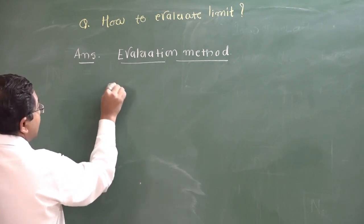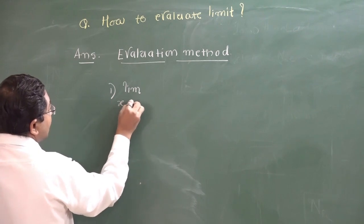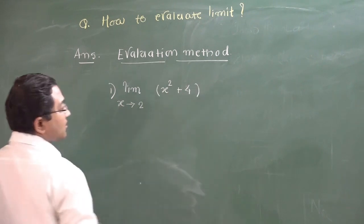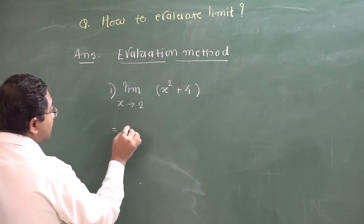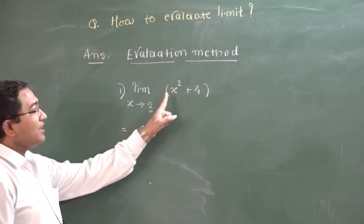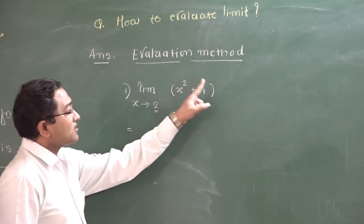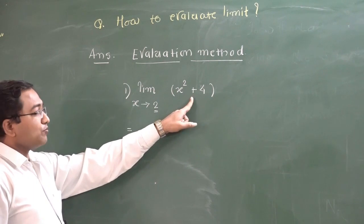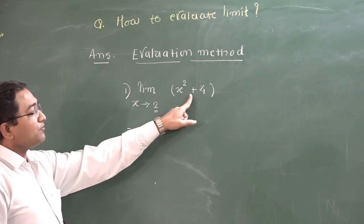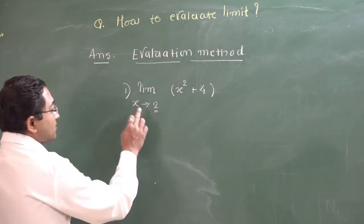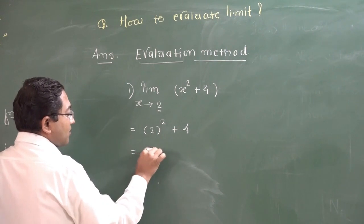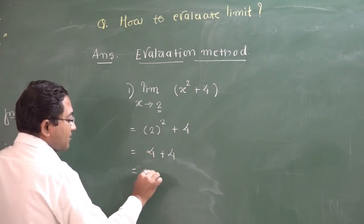For example, suppose we want to find the limit as x tends to 2 of x² + 4. We can directly substitute x = 2 because the given function does not have a denominator — effectively the denominator is 1 — and it gives a finite answer with no further factorization needed. Substituting x = 2: 2² + 4 = 4 + 4 = 8.